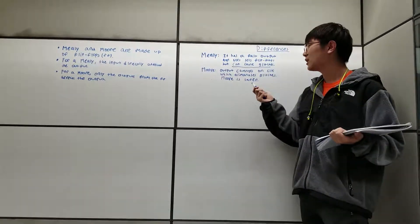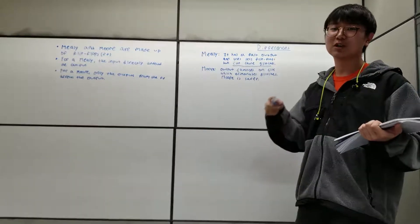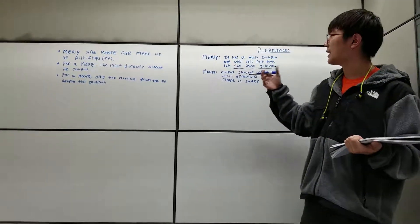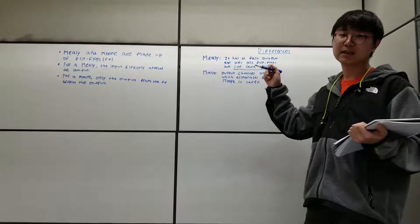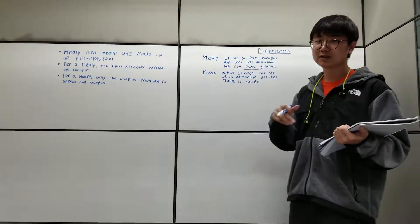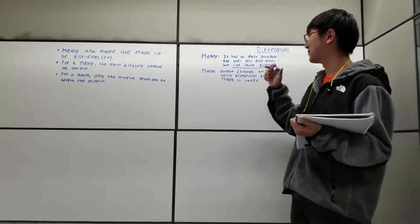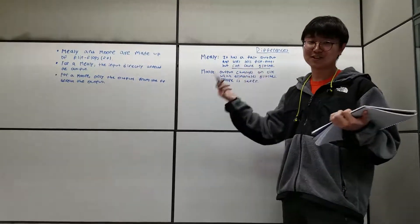For Moore, the output changes on clock, which eliminates the glitches, and Moore is safer. The biggest difference is that Mealy can cause glitches, Moore doesn't. So nowadays, Moore's better, since it doesn't cause glitches at all.